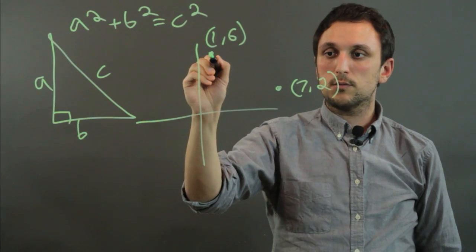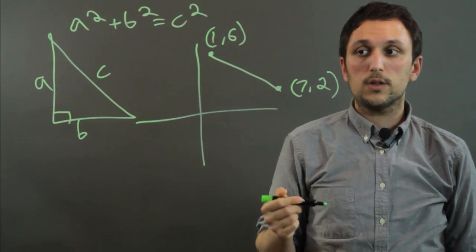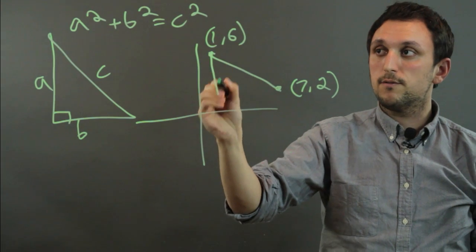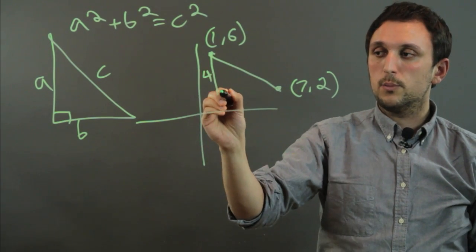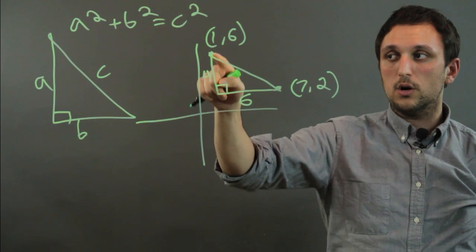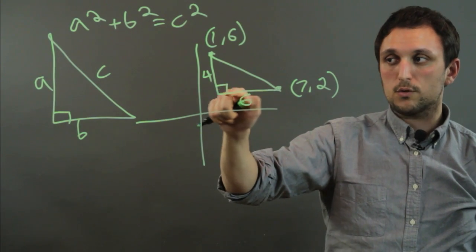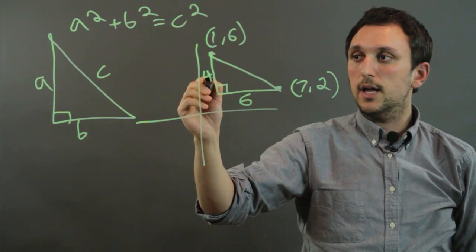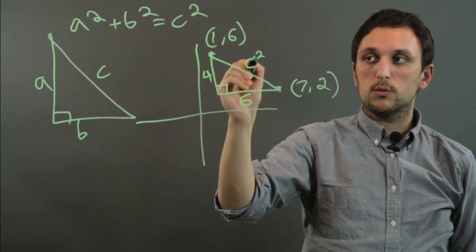The easiest way to find the distance between these two is to do the Pythagorean theorem. We go down 4 from 6 to 2 and we go over 1 to 7, we go over 6. So we now have gone down straight and over straight, so we have a 90 degree angle and 4 squared plus 6 squared is going to equal C squared.